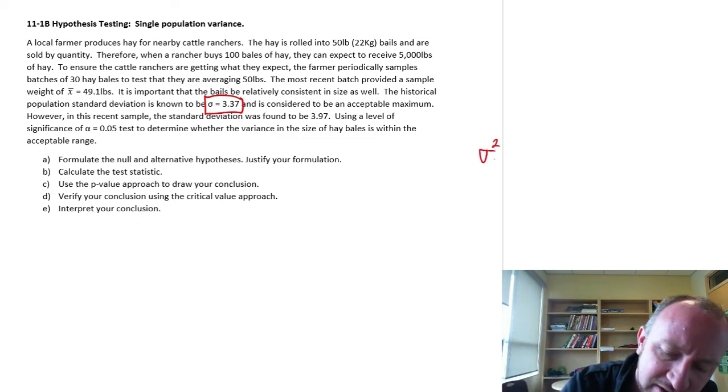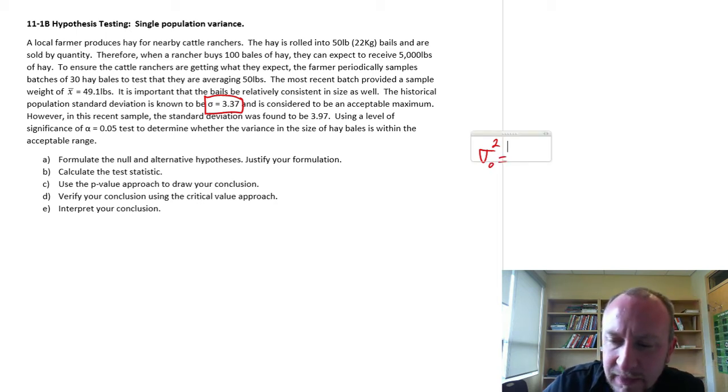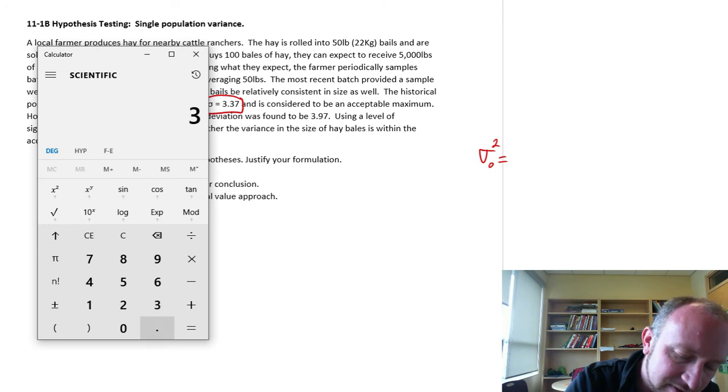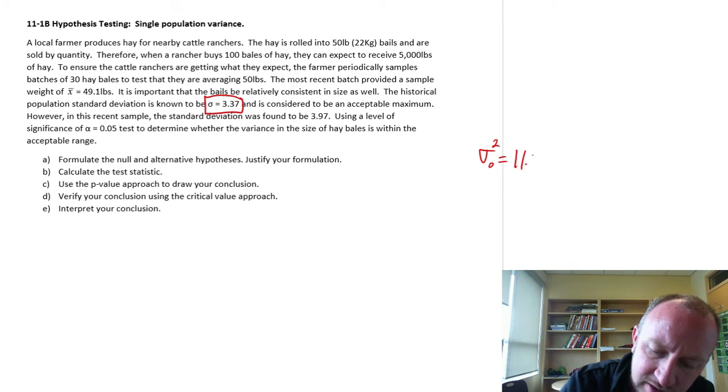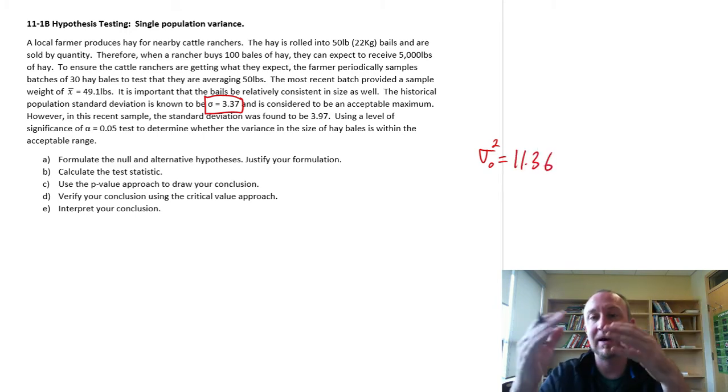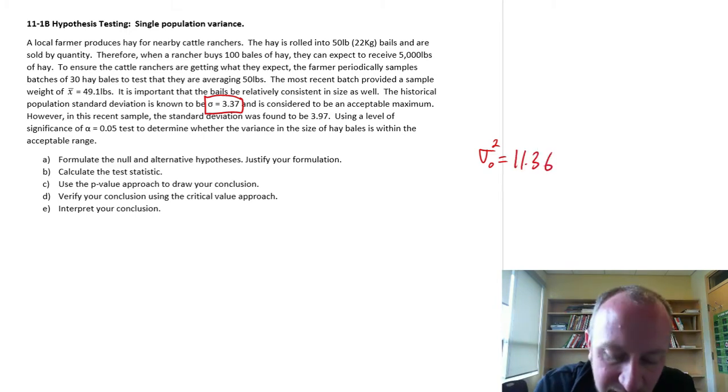The historical population standard deviation is known to be 3.37 and is considered to be an acceptable maximum. So this is going to give us our hypothesized value. I won't use 3.37. I'll be using 3.37 squared, so 11.36. So that is our acceptable maximum variance that we will allow.